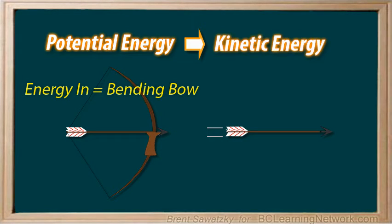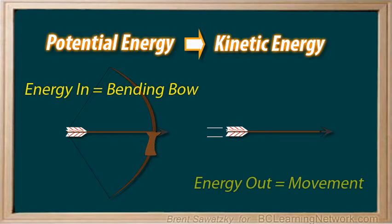The arrow goes flying through the air — definitely the energy of motion. So a bow and arrow clearly converts potential energy into kinetic energy.